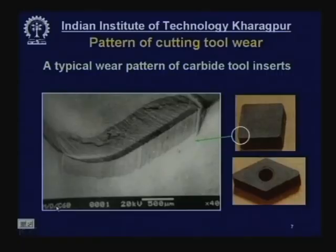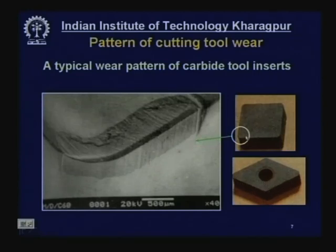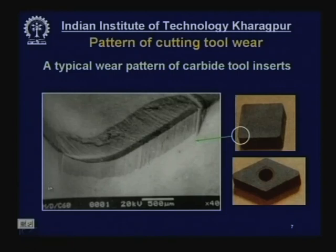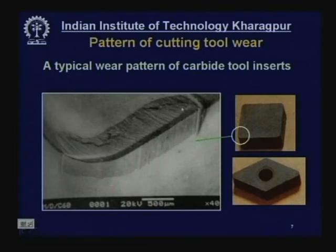A typical wear pattern of carbide tool inserts shows a square insert with three surfaces: the rake surface, principal flank, and auxiliary flank. On the rake surface, crater wear appears as grooving; on the principal flank, flank wear is very uniform; and on the auxiliary flank, notching wear appears as a groove. Grooving wear at the corner of the rake surface is basically a chemical wear process in addition to abrasion.